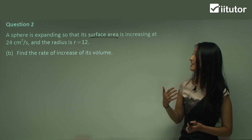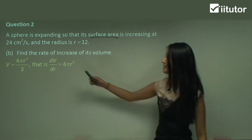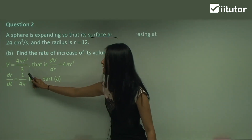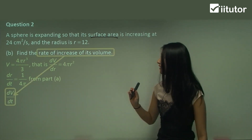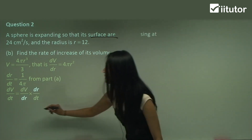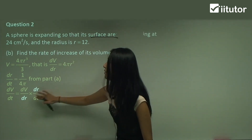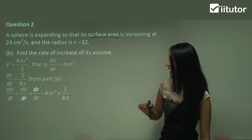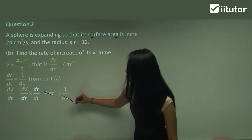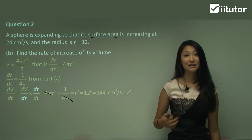Let's go on to finding the rate of increase for the volume. We see volume, we write out the equation, and the derivative dV on dr was 4πr squared from before. From part A, we have dr on dt equals 1 on 4π, so we can use that again. The rate of increase for volume is dV on dt. Since we have dV on dr, we put dr there. So we have 4πr squared from here and 1 on 4π from part A — the 4π and 4π cancel, leaving r squared. Substituting r equals 12 gives 144 centimetres cubed per second.